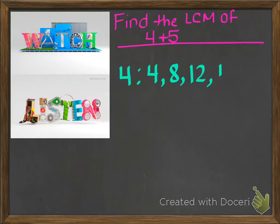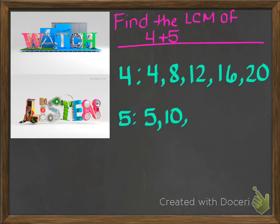4, 8, 12. The next one would be 16 and then 20. Now we're going to do the same thing with 5. We're going to list the multiples of 5. We've got 5, 10, 15, 20, and we're going to stop there.